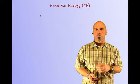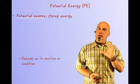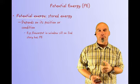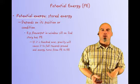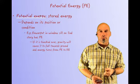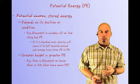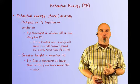Potential energy is stored energy. It depends on an object's position or condition relative to a zero surface. A flower pot on a windowsill on a second-story window has potential energy. If it's knocked over, gravity will cause it to fall toward the ground, and the energy changes from potential energy to kinetic energy. The greater the height, the greater the potential energy. So which has more potential energy — a flower pot on a lower floor or on a fifth floor, and why?